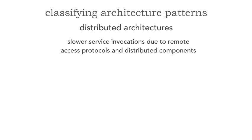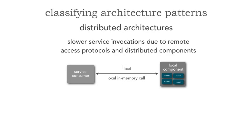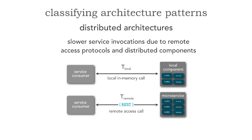Another difference we take for granted in monolithic architectures is the in-memory call. When we instantiate or inject a class and invoke a method, we don't even think about it because it's measured in microseconds — I'll call that tlocal, the time of that local call. When we move to distributed architectures, pretty much everything is remote, and we have to deal with latency — the time of the remote call, tremote. Math does not lie: tremote will always be greater than tlocal. I usually use 100 milliseconds round-trip as an example; I've seen as low as 67 and as high as 200 milliseconds in latency. This is something we have to take into account for inter-service communication.